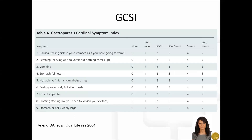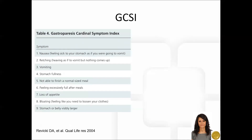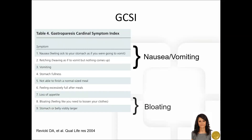This table demonstrates the elements of the GCSI, with a range of symptoms measured on a scale of 0 to 5, with 5 being the most severe. The symptoms measured range from nausea and vomiting to bloating, as well as fullness and early satiety.